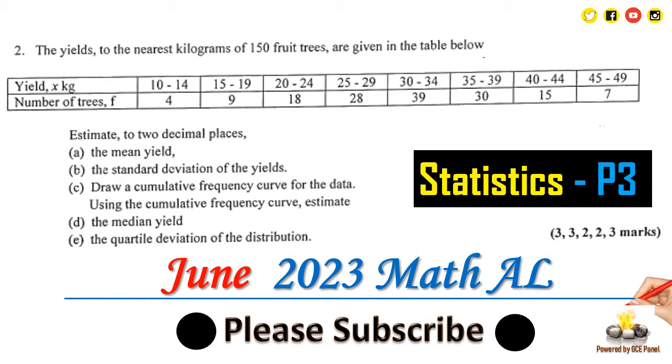Question two reads: The yields, to the nearest kilograms, of 150 fruit trees are given in the table below. We have the yields x in kilograms: 10 to 14, 15 to 19, 20 to 24, and so on, and then the number of trees f (that's the frequency): 4, 9, 18, respectively. They want us to estimate, to two decimal places, the mean yield, the standard deviation of the yields, and draw a cumulative frequency curve for the data.